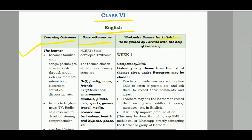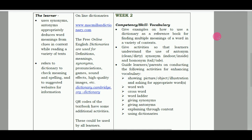इन सभी activities को करने के बाद उसको क्या सीखने को मिला — यह learning outcome है। Source का मतलब है कि किस book से पढ़ना है, कहाँ से पढ़ना है, कौन सा content पढ़ना है — यह सभी जानकारी source में आपको मिल जाएगी। Daily basis पर या week basis पर जो भी activity करनी है उसकी जानकारी third column के अंदर मिलेगी। इसी तरह week 2 के लिए भी content मिल जाएगा, और बीच-बीच में काफी useful links भी दिए गए हैं।